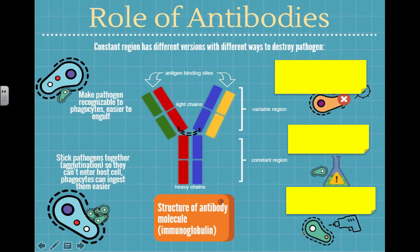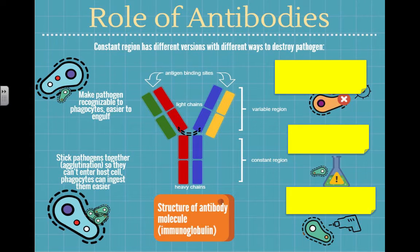When pathogens get surrounded by large amounts of antibodies, it causes them to stick together or group together — this is called agglutination. They can then be more easily identified as big clumps. It's like in war: if you're trying to find the bad guys, if you tie a bunch of them together it's a lot easier to target them.